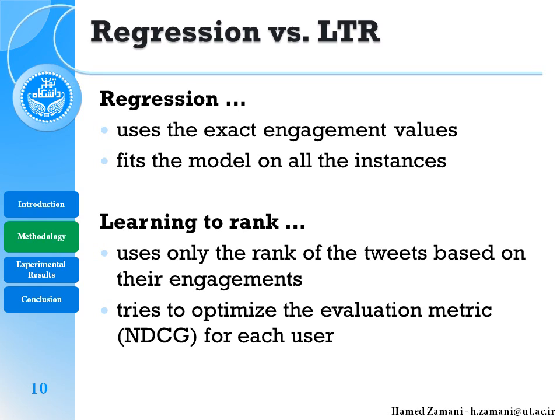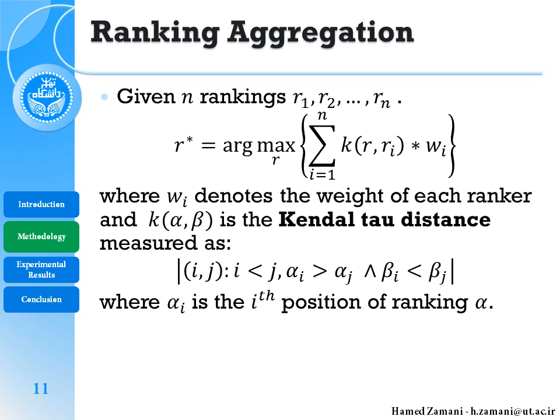Comparing regression and learning to rank: regression uses the exact engagement values but learning to rank does not. Regression fits the model for all instances and is not specific for each user, while learning to rank can optimize the evaluation metric — here NDCG@10 — for each user. Regression cannot do this; we optimize the regression models based on MAE (mean absolute error).